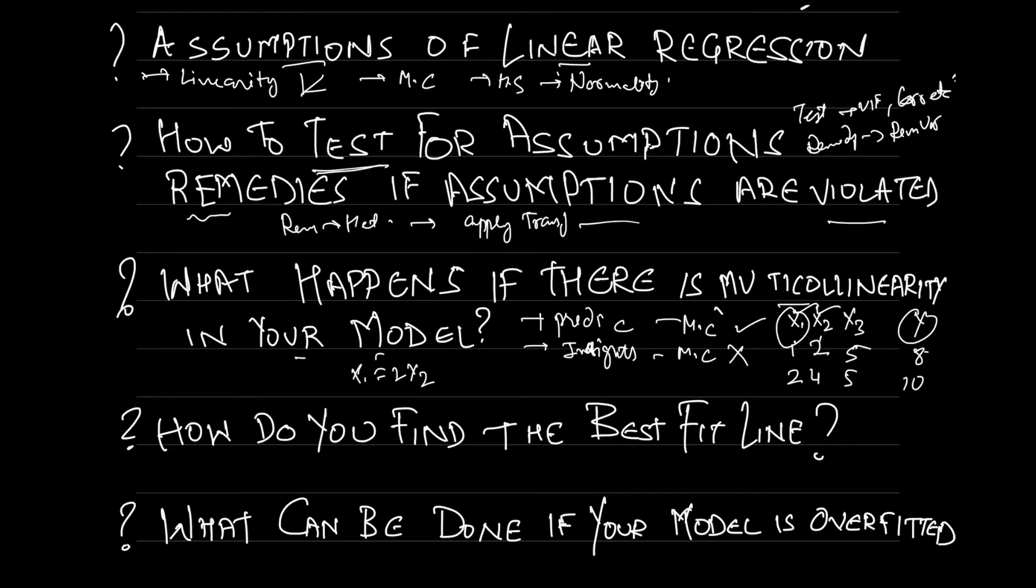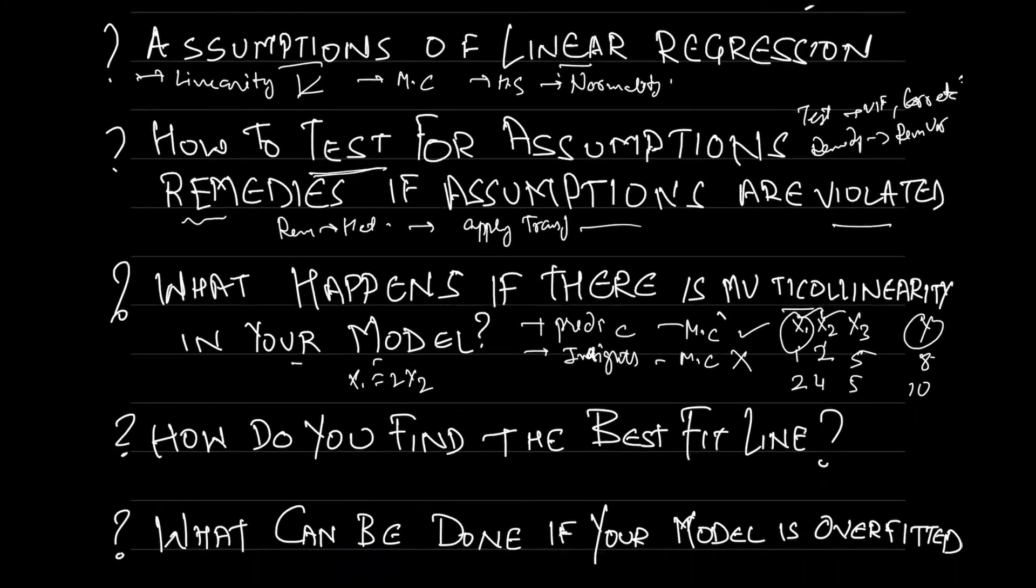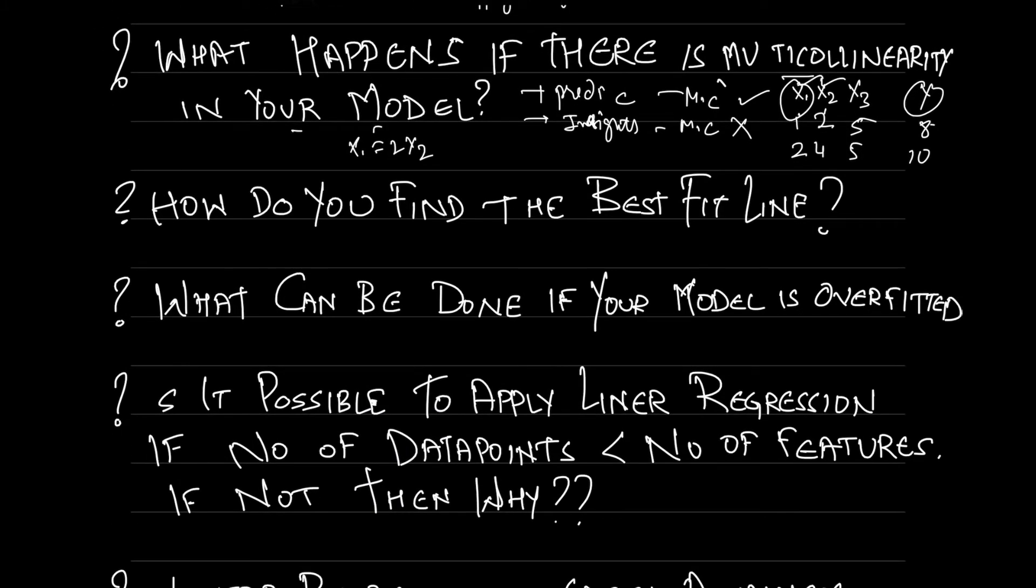That is why the coefficients of my variables won't be reliable and I won't be able to interpret my model nicely. Coming to the fourth question: how do you find the best fit line? Now I also discussed this in brief in my previous video. There are usually two common methods to find this: one is ordinary least square method and another is gradient descent method. There could be some questions based on how these methods work and how they are different from each other.